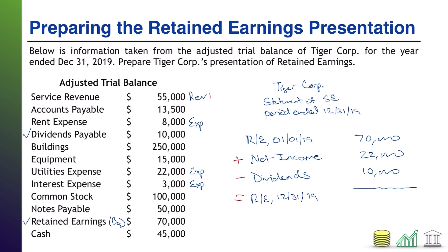Now I can go ahead and finalize my statement. I've got my $70,000 beginning balance plus $22,000 net income, which puts me at $92,000, minus $10,000 for dividends. That puts my ending balance at $82,000. Now I'm going to polish this statement up just a bit. In the actual presentation of the financials, it is not going to be shown as a mathematical formula, even though that's what's going on. So I'm going to remove my math notation and instead add parentheses around the dividends number, because parentheses indicate you subtract that number.